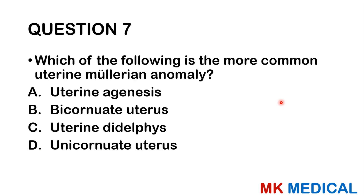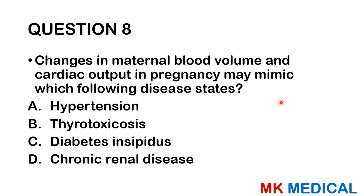Question seven: Which of the following is the more common uterine Mullerian anomaly? A, uterine agenesis; B, bicornuate uterus; C, uterine didelphys; D, unicornuate uterus. Of course, it's the bicornuate uterus.